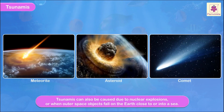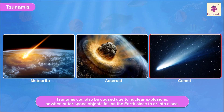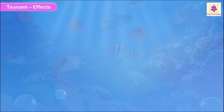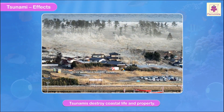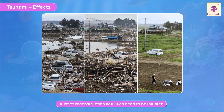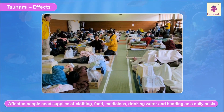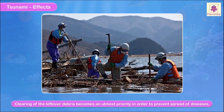Tsunamis can also be triggered when outer space objects such as meteorites, asteroids, or comets fall on or close to a sea. Effects of tsunamis: Tsunamis destroy coastal life and property. A lot of reconstruction activities need to be initiated. Affected people need supplies of clothing, food, medicines, drinking water, and bedding on a daily basis. Clearing of leftover debris becomes an utmost priority in order to prevent the spread of diseases.